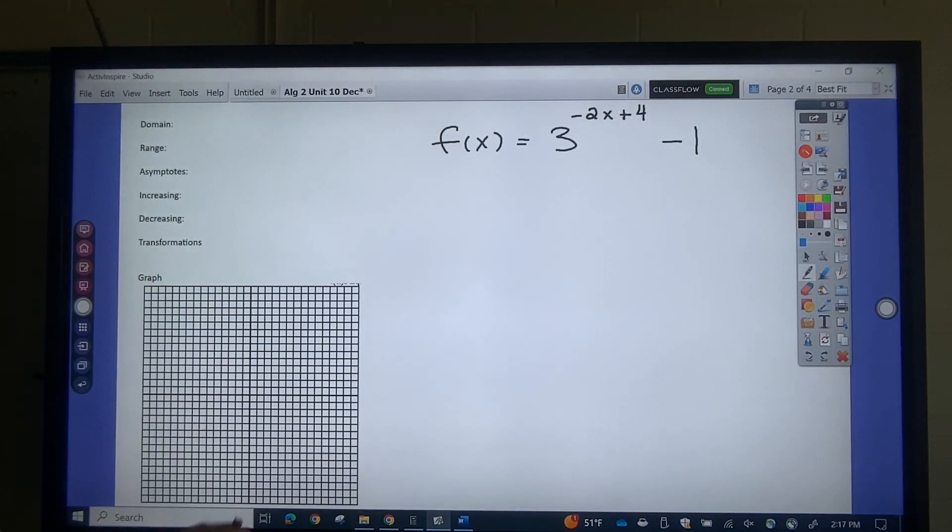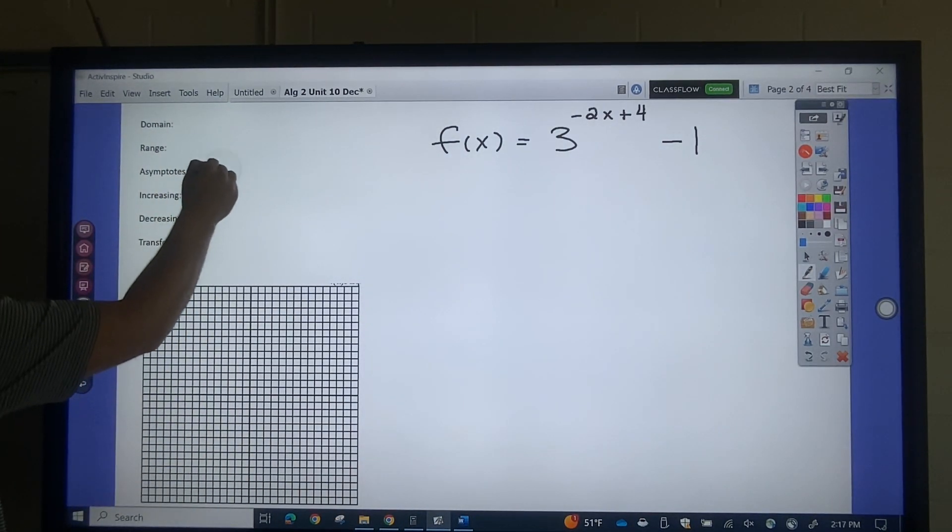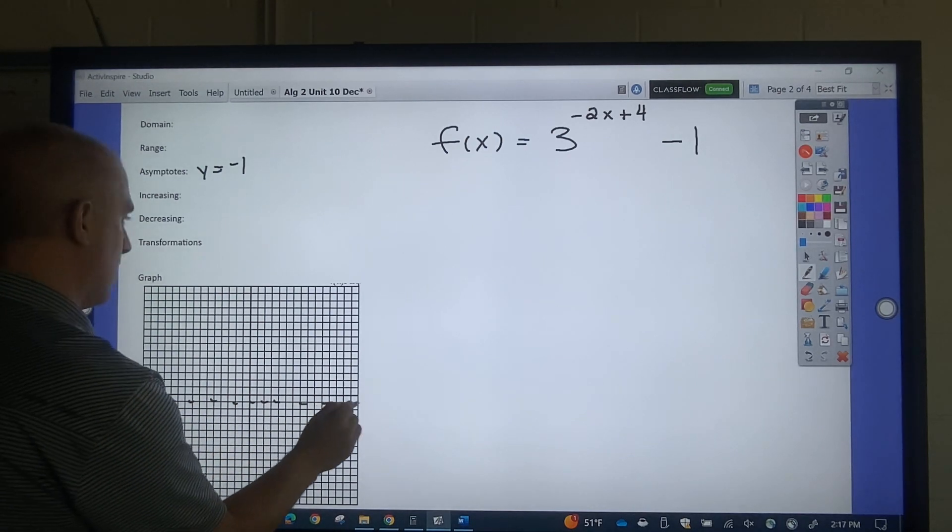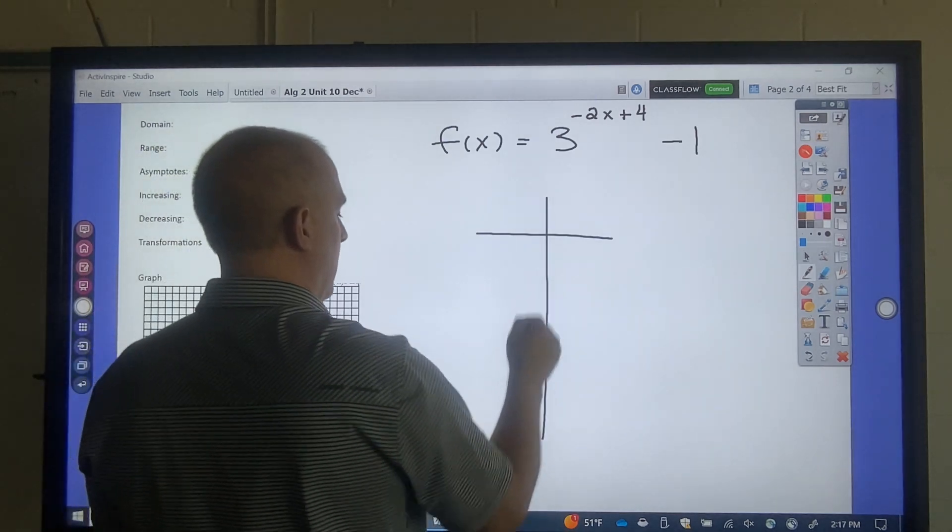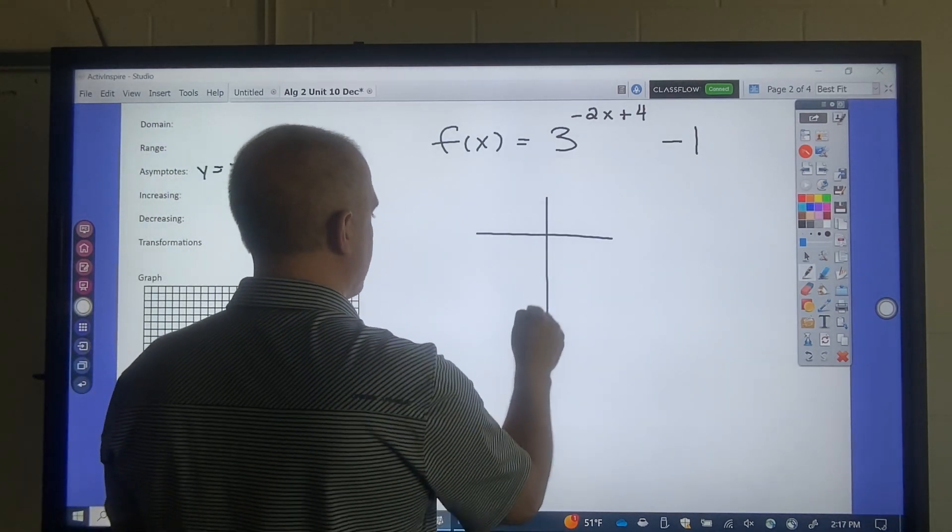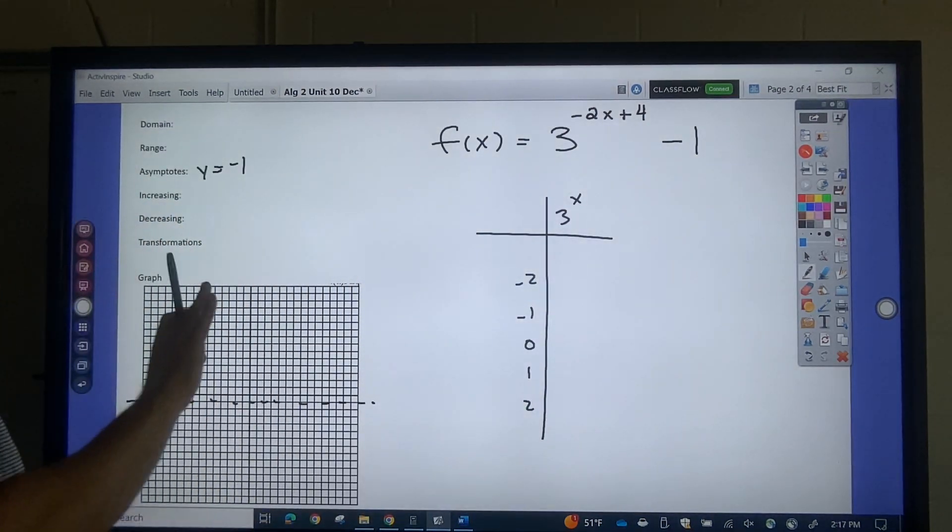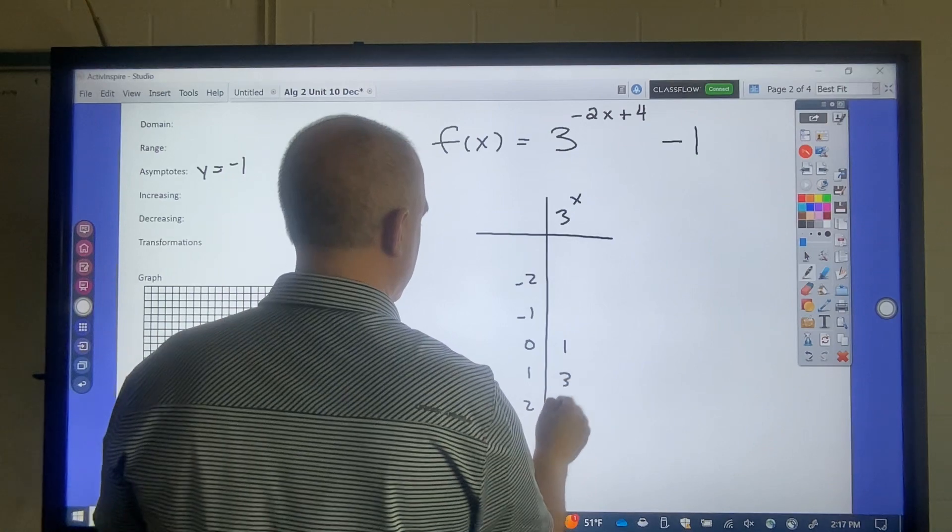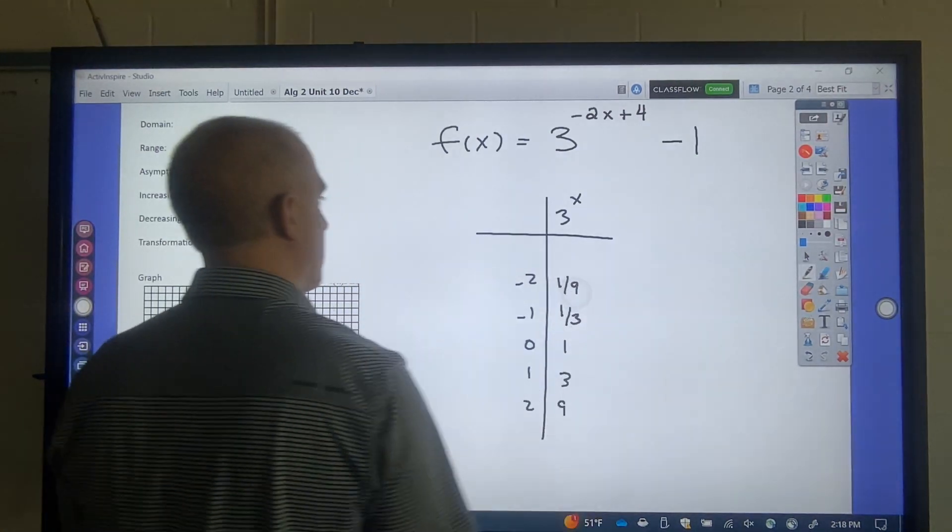So I got this one. So my horizontal asymptote is going to be y equals negative 1, so right here. So what I would do is make my table. I got 0, 1, 2, negative 1, negative 2. That's 3 to the x. I don't need all the other numbers. 3 to the 0 is 1. 3 to the 1st is 3. 3 squared is 9. So 1 third, 1 ninth.